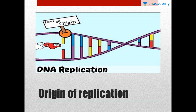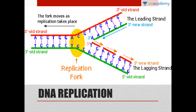In the initiation step, the DNA unwinds. Some enzymes find the point of origin — the specific point on the DNA from where replication will start. This point is known as the origin of replication. After the DNA unbinds, the enzymes identify the origin of replication.